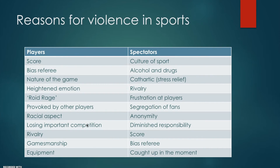Reasons for violence in sport include players being angry at the score, which can also affect spectators, a biased referee affecting both players and spectators, the nature of the game — contact sports naturally involve more violence — and heightened emotion, where an athlete gets caught up in the moment. If an athlete is taking drugs, roid rage could come into play where they can't really control it.